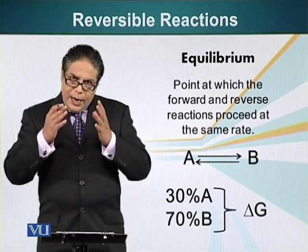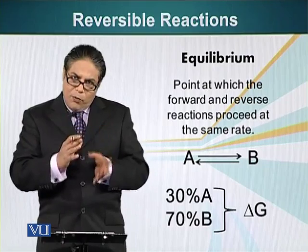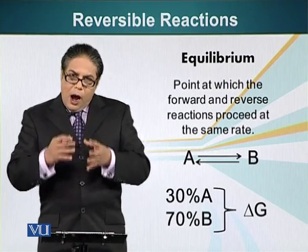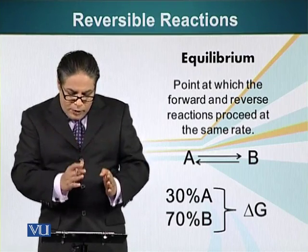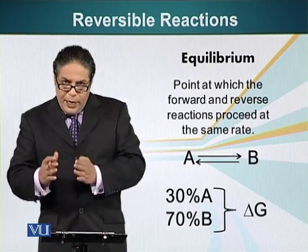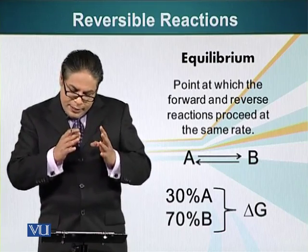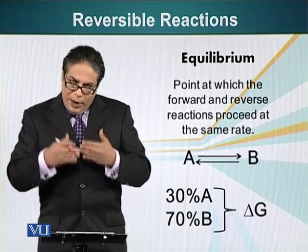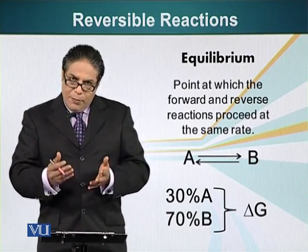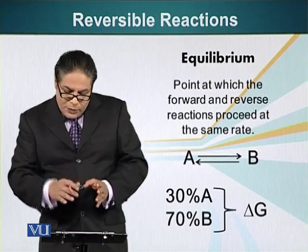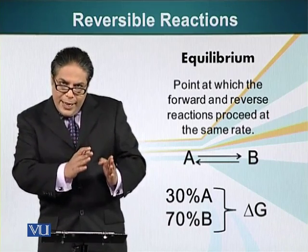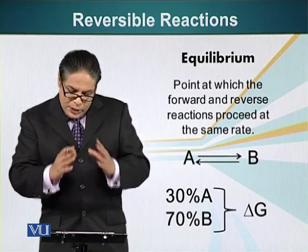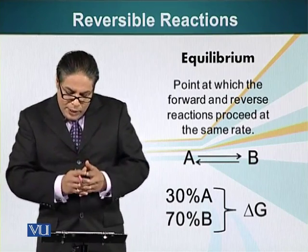In our case, at equilibrium 30 percent of the molecules in the system are A and 70 percent are B. So conversion of A into B is a reaction which is exothermic — it has a negative delta G. Because energy is being released, A has a smaller proportion in our reaction tube compared to B.